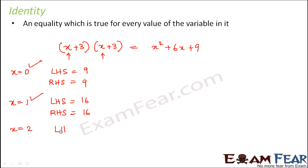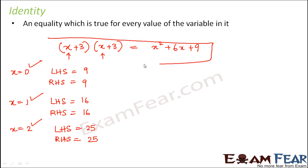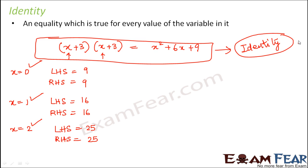Let us try x equal to 2. Left hand side is 2 plus 3 is 5, and 5 into 5 would be 25. Right hand side: 2 squared is 4, plus 6 into 2 is 12, so 12 plus 4 is 16, and 16 plus 9 is 25. So x equal to 2 is also a possible value. If you keep putting any value of x for this equation, you would see that the equation holds true. This is different from the previous case, where the equation was true only for x equal to 3. Here, this equation is true for all values of x — so this type of equation is called an identity. An identity is an algebraic equation with the special property that it holds true for all values of the variables in it.